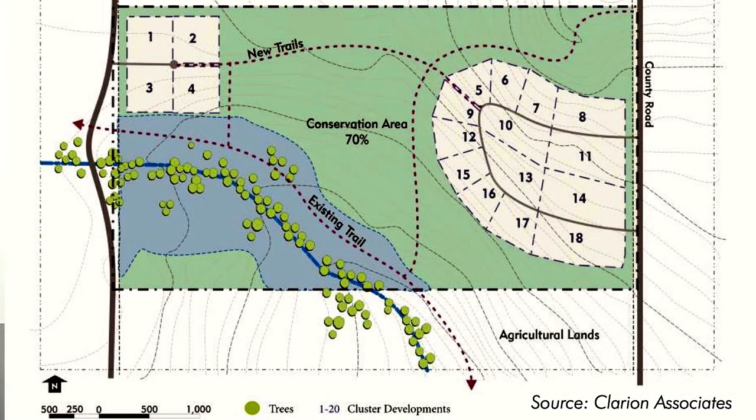houses are built closer together on a part of land rather than spread evenly on larger lots over the whole development. So the theory is that if you have a large tract of land, instead of spreading out 10 houses on this big parcel, cluster development is not increasing the density, but basically allowing for smaller lot sizes in that zone to cluster the houses in a smaller area and preserving the open space.